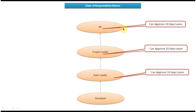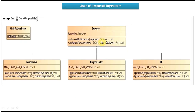To implement this, I have created the class diagram below. Here you can see an Employee abstract class with an abstract method called applyLeave, where you pass the employee name and the number of days leave. This Employee abstract class is extended by TeamLeader, ProjectLeader, and HR, and each subclass provides its own implementation of the applyLeave method. There is also a method called setNextSupervisor.